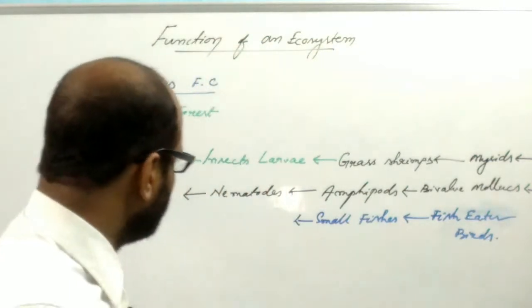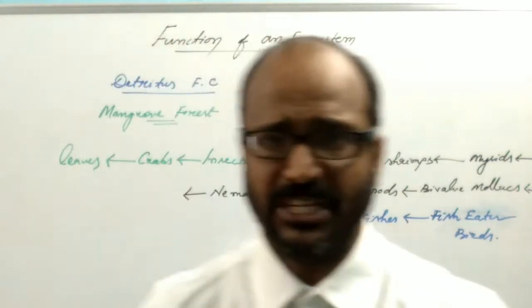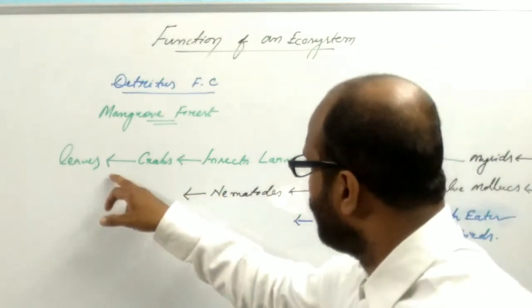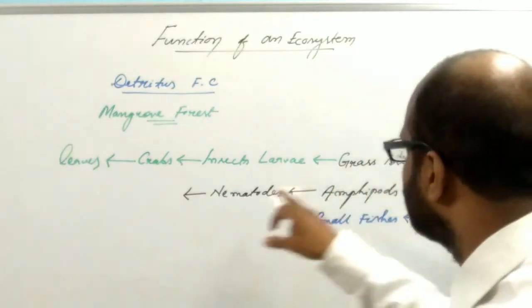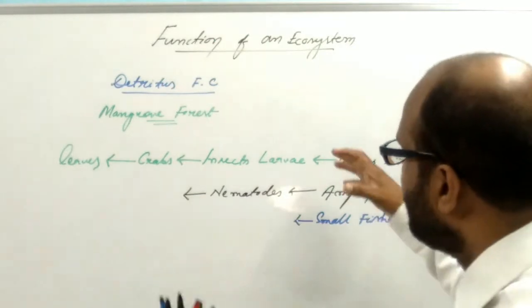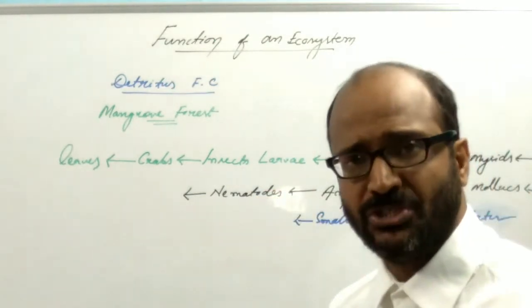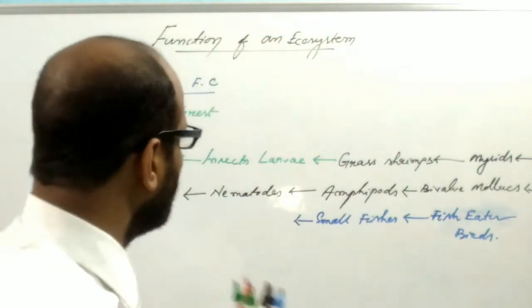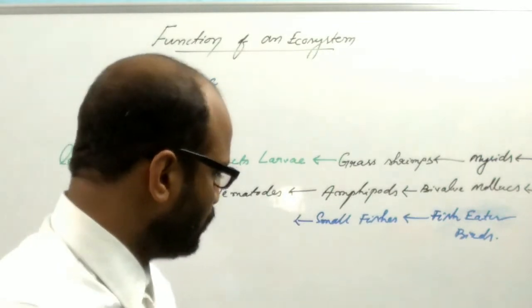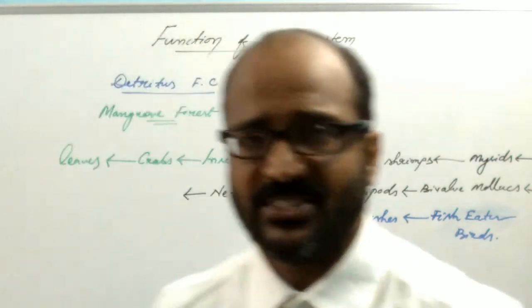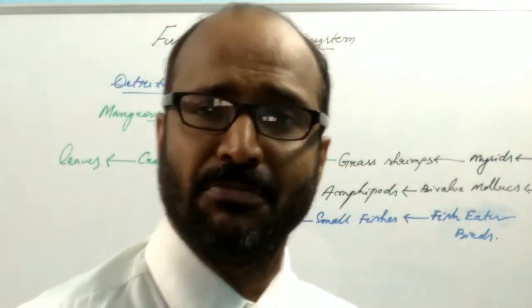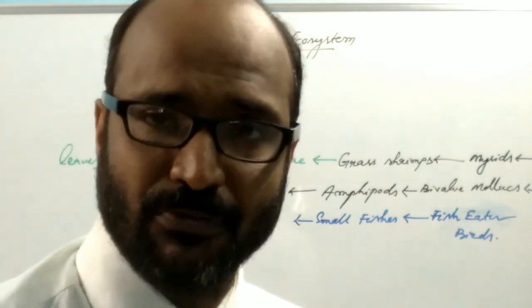In the ecosystem, in nature, the operation of a single sequence food chain is not possible. So many food chains are interlinked to each other, forming an interlocking pattern which is known as the food web. In my another video, I will discuss about the food web. If you like, then click on my another video regarding the food web. Thank you for watching.